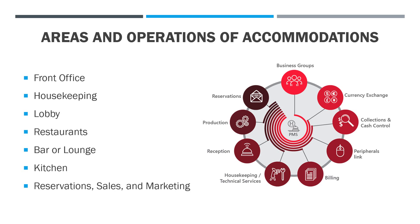Another area is reservations, sales, and marketing. These offices are considered as back office. When we identify the operations of the hotel, we basically categorize them into two: front office and back office. Front office areas have direct contact with our guests — they are the frontline of the hotel. Back office departments cannot be seen or do not have direct contact with our guests, such as reservations, sales and marketing, accounting, billing, and so on.